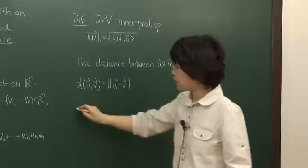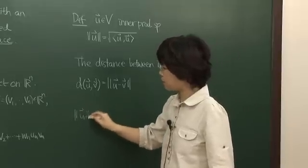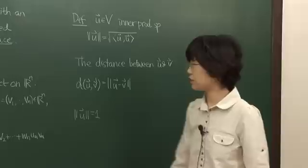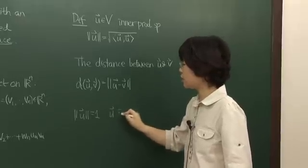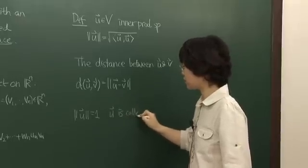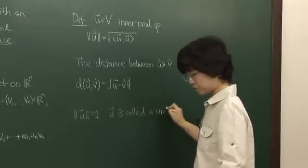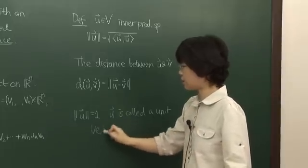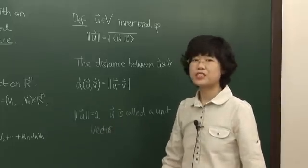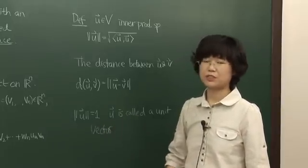And especially if length of a vector is 1, then U is called a unit vector. Now we will see some examples with specific numbers.